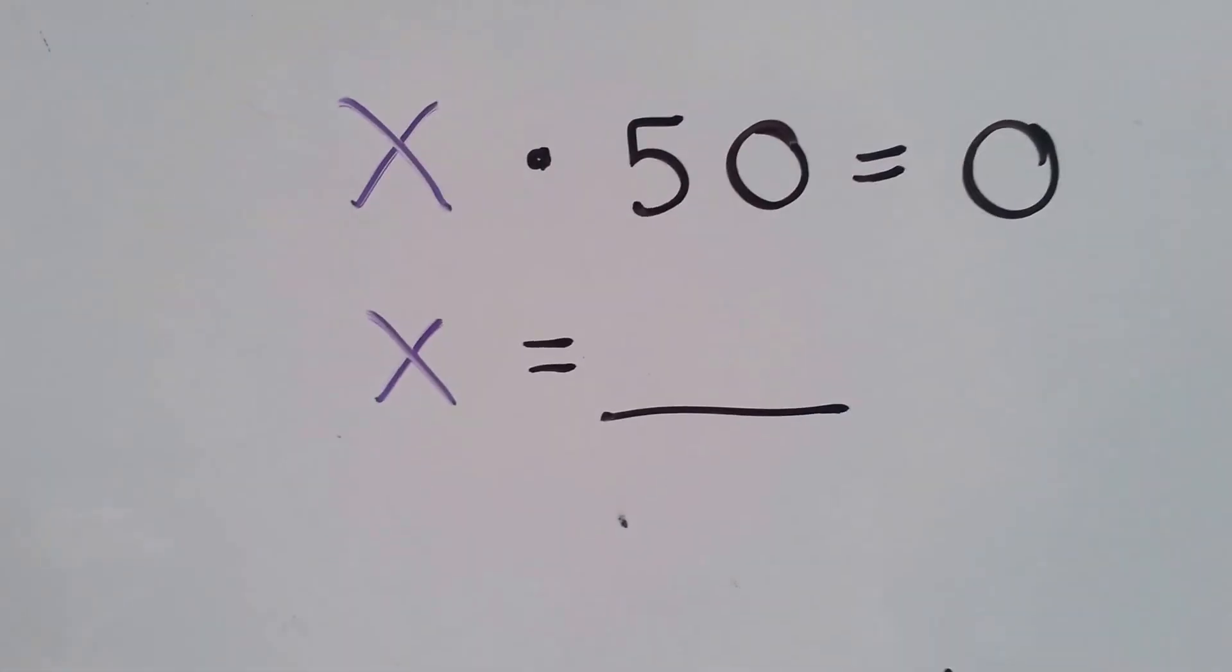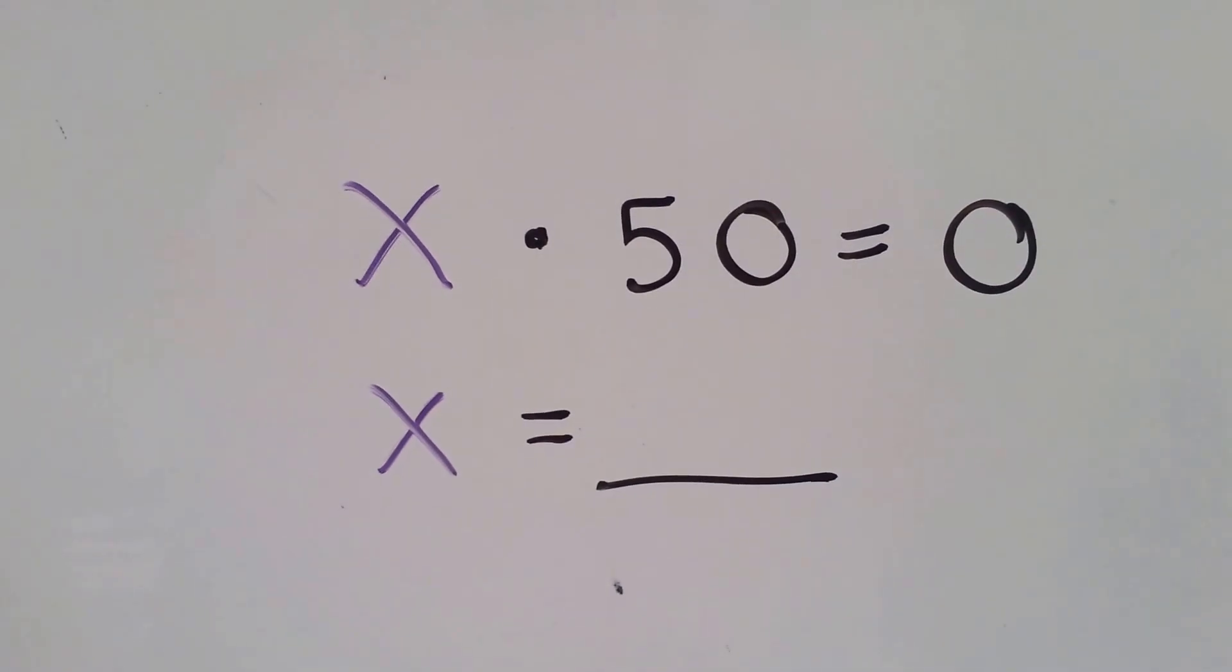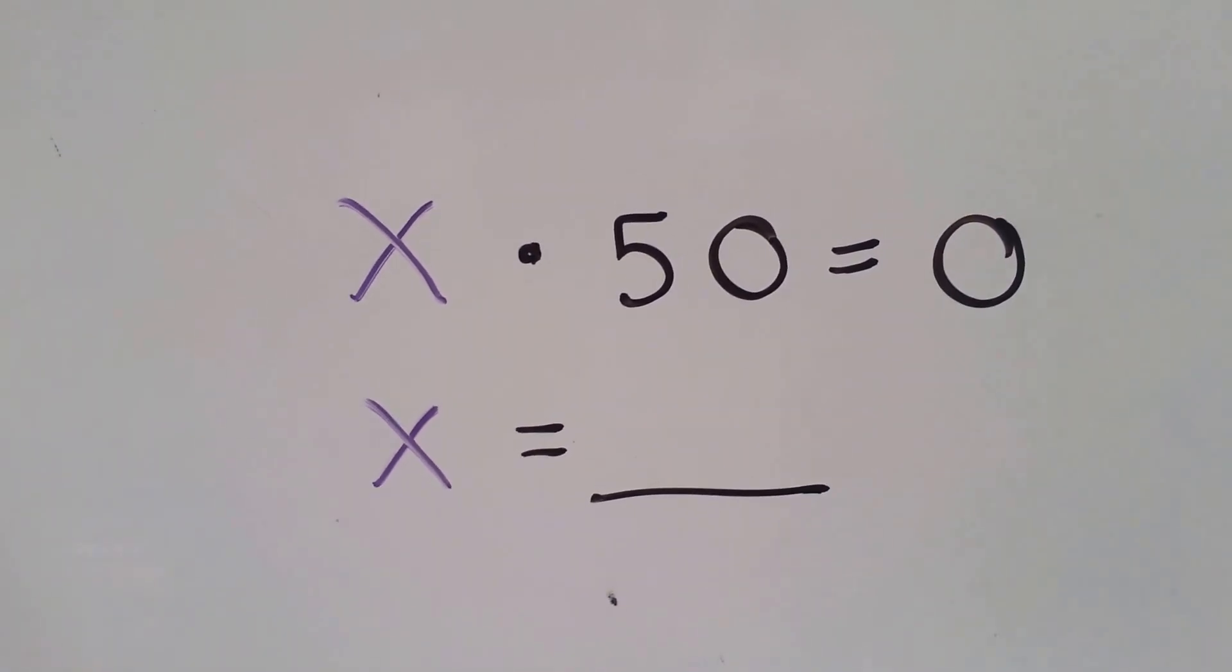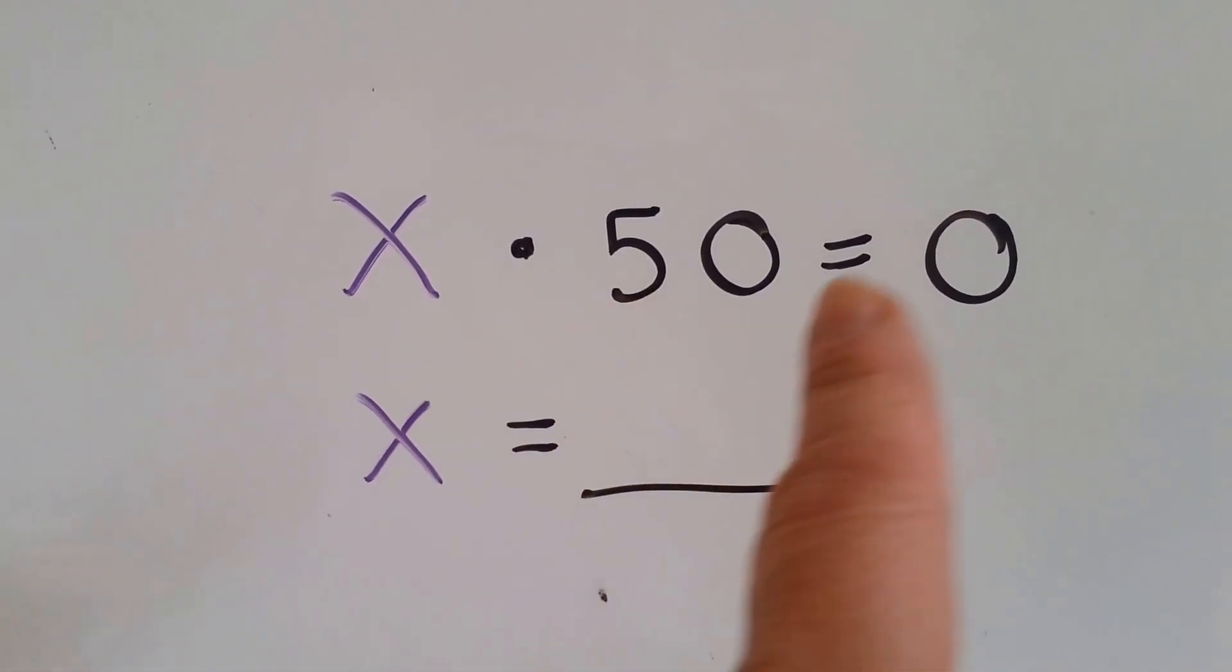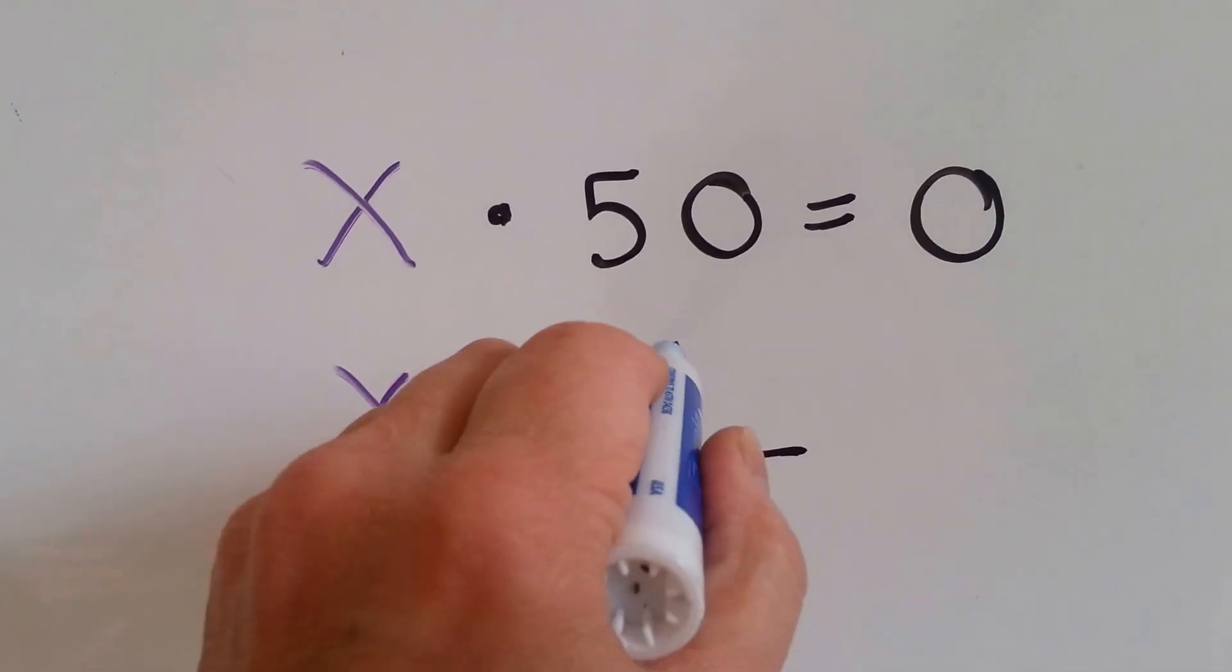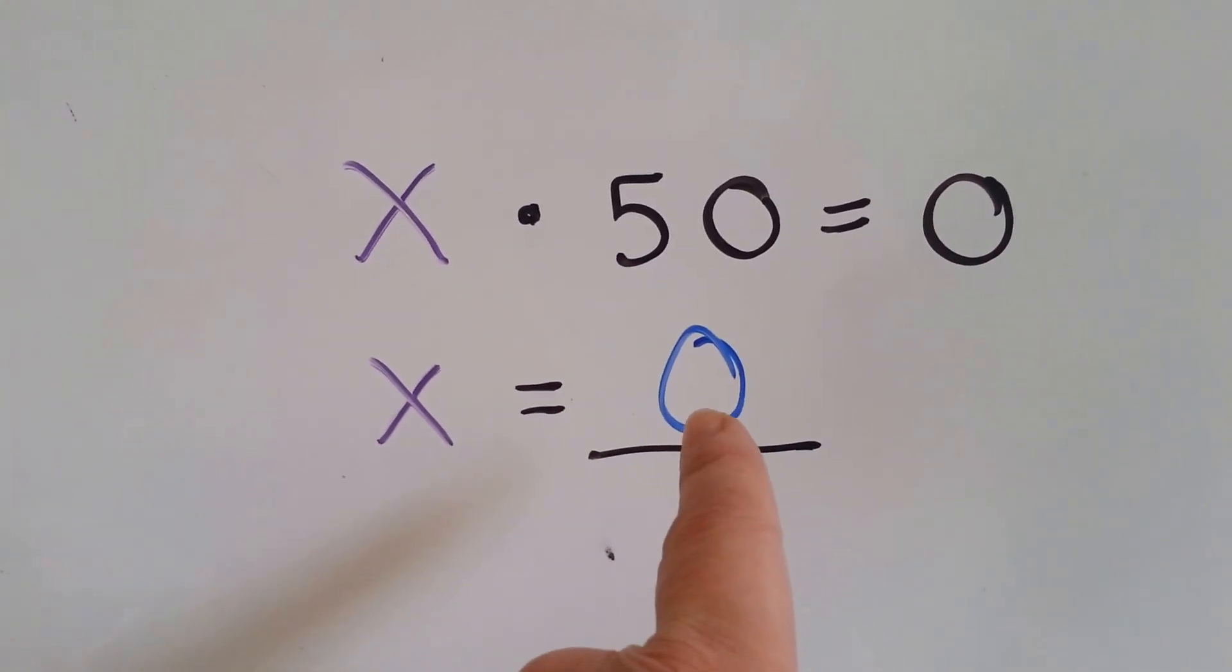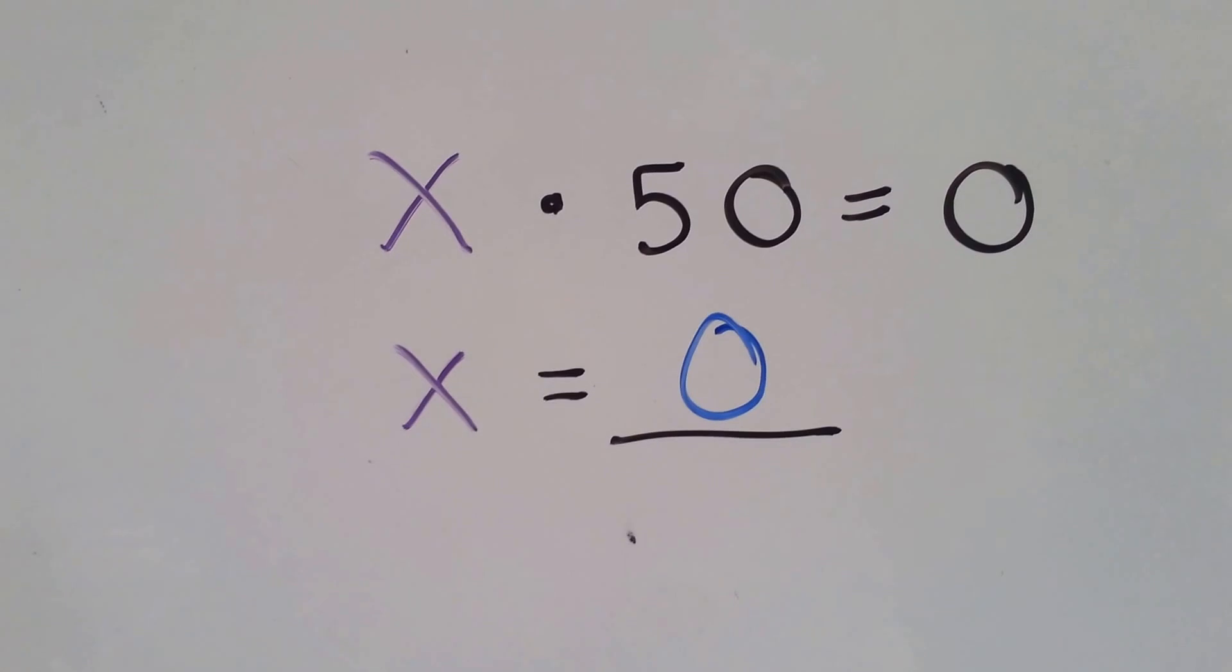Let's try this one. x times 50 equals 0. What could you multiply by 50 and only get a 0? Guess what? 0 times any number is always 0. So x is equal to 0.